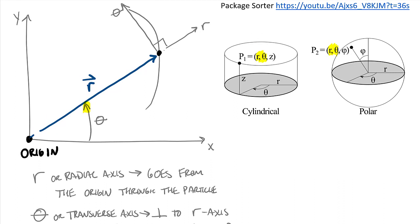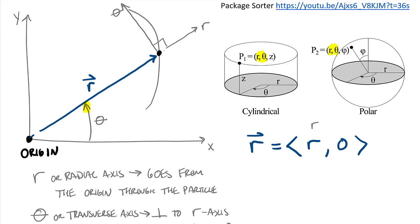Let's write out the r position vector as components. The vector r equals [r, 0] in r-theta notation, meaning 100% of the position vector is in the r-axis direction and there is zero distance in the theta direction.